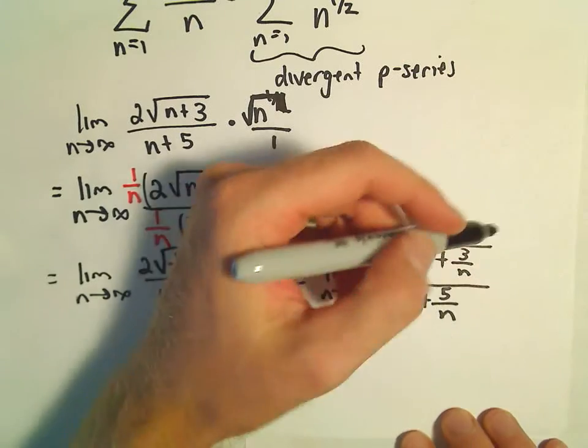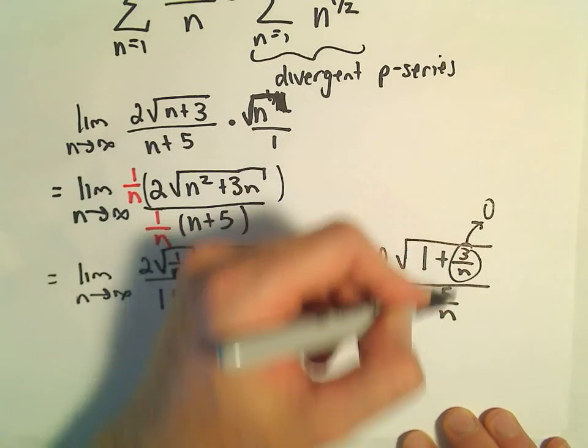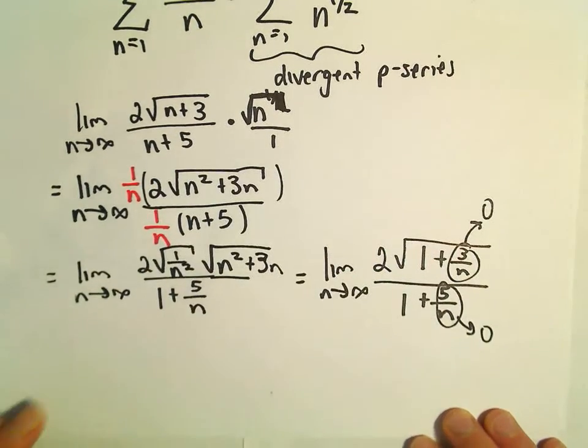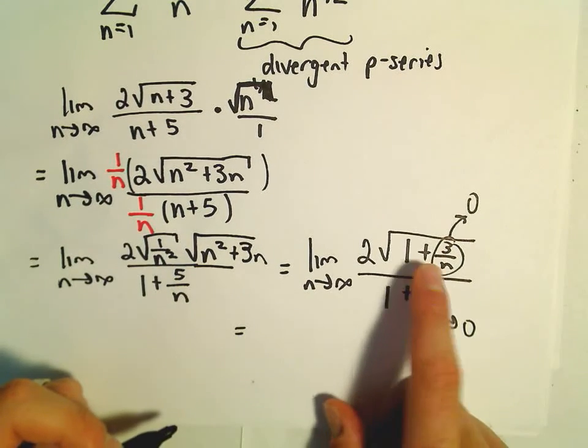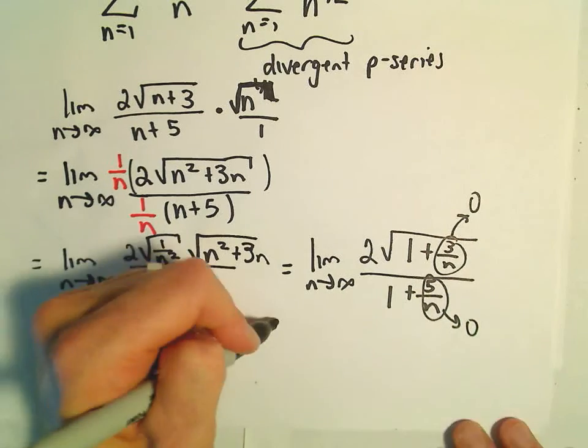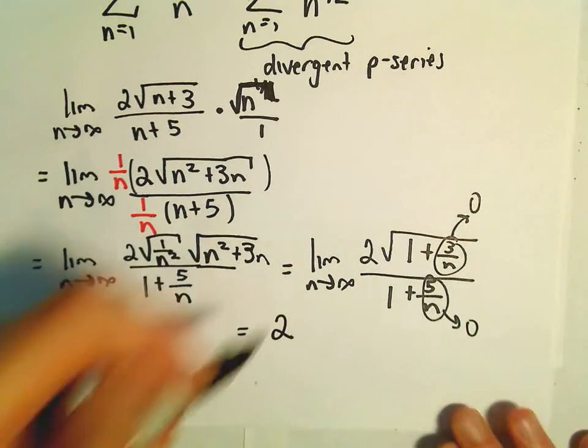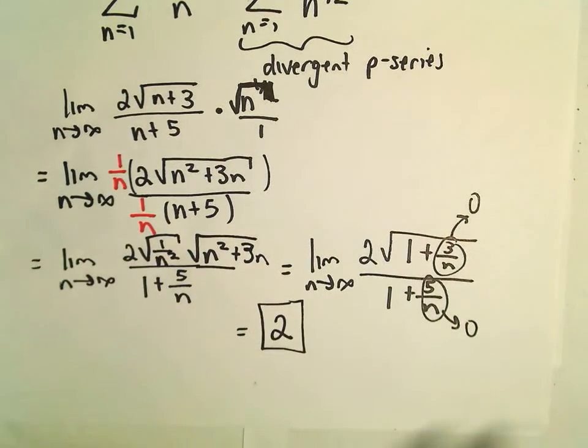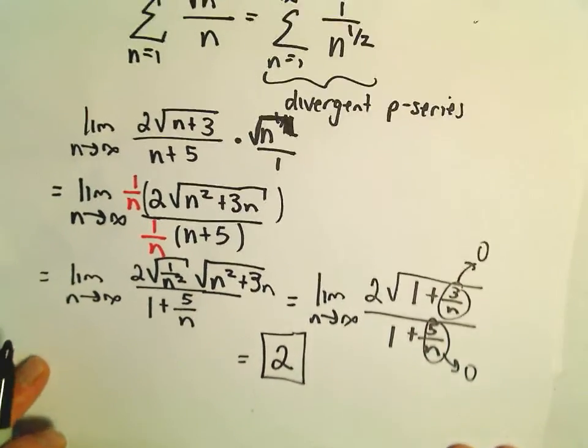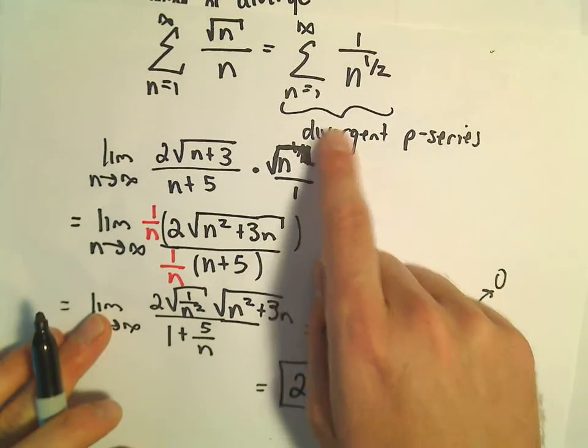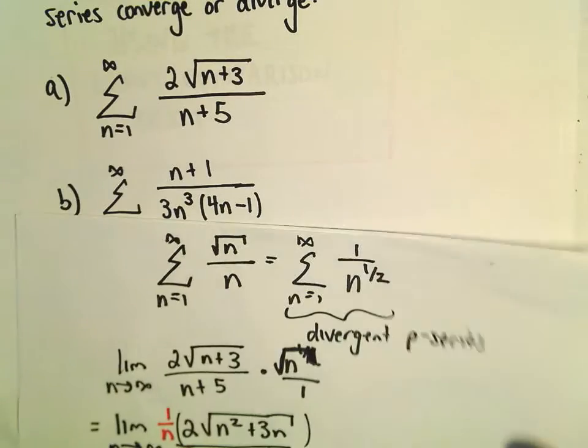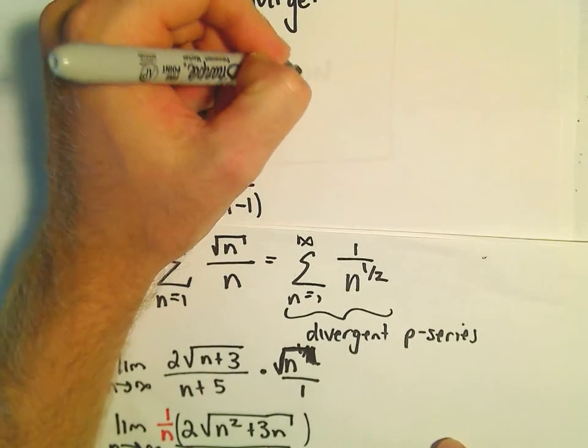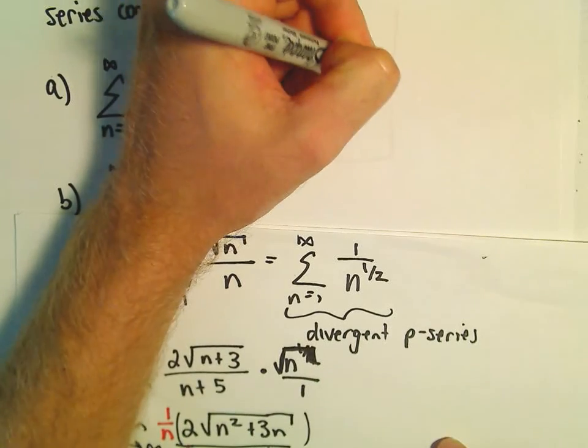As n goes to infinity, 3 over n is going to go to 0. 5 over n will also go to 0. So we'll be left with 2 times the square root of 1 plus 0 over 1 plus 0. And that will leave us with our value of 2. So in this case, we've got our positive finite number. Again, since the original series that we're comparing it to is a divergent p-series, that means that our starting series must be divergent.